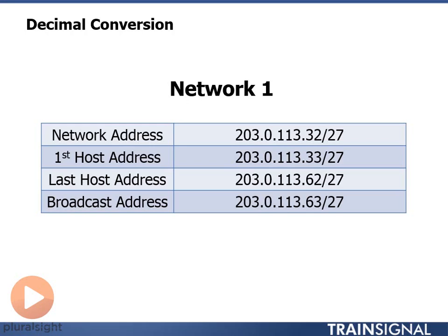So in the second case, network number 1, it has a network address of 203.0.113.32/27. My first host is one higher than my network, which is .33. My last host is .62, and my broadcast address is .63. And all of these are /27.